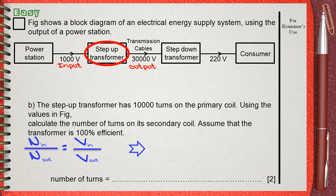This means that 10,000, which is the number of turnings on the input, the primary coil, divided by the number of turnings of output that we need to calculate, equals 1,000, which is the voltage on the input, divided by 30,000, which is the voltage on the output.